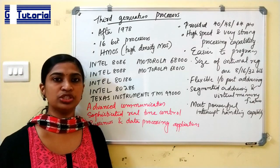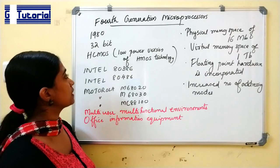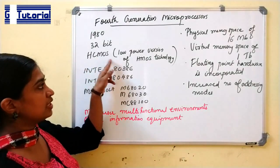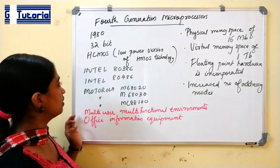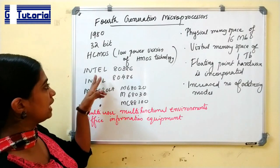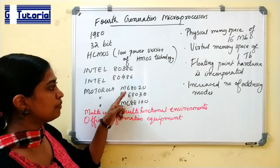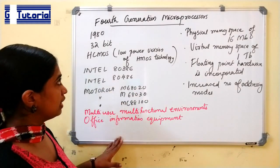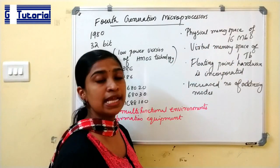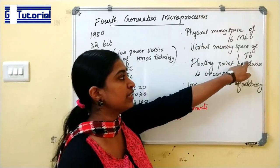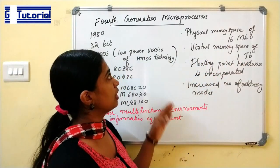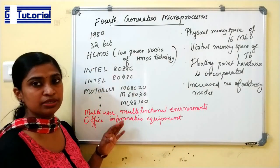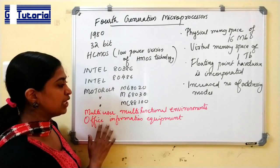Fourth generation microprocessors were introduced in 1980 and were 32-bit processors. They used HCMOS technology, the low power version of HMOS. Some examples are Intel 80386, Intel 80486, Motorola M68020, Motorola M68030, and Motorola MC88100. Features include a physical memory space of 16 MB and virtual memory space of 1 TB. Floating point hardware was incorporated and they supported an increased number of addressing modes. Applications include office information equipment and multi-user, multi-functional environments.